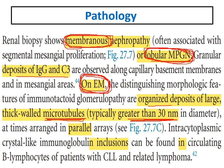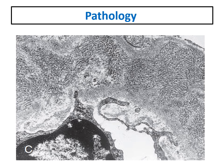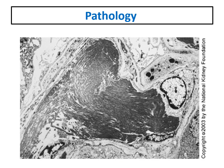The deposition is usually organized in a parallel fashion. We can also find intracytoplasmic inclusions in circulating B lymphocytes in patients with CLL or lymphoma. This electron microscopy picture shows microtubule deposition in a parallel arrangement in the sub-epithelial space, with tubules of approximately 50 nanometers diameter arranged in parallel.